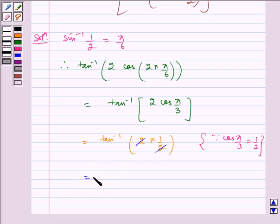This gets cancelled. So which is equal to tan inverse of 1 which is equal to pi by 4.